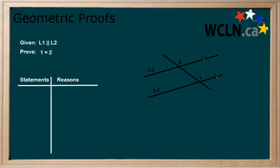Next, there is a prove statement. Here, we need to prove that angle one equals angle two. As with the given statement, any lines or angles that are named in the prove statement should also be clearly marked on the diagram.